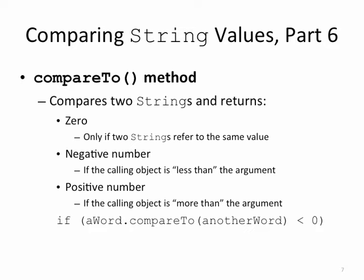The compareTo method is much like the equals method in that it can be used to compare strings. But the compareTo method does not return true or false. It returns an integer. And that integer is zero if the two strings are the same, negative if the first string is less than the second string, or positive if the first string is greater than the argument string.